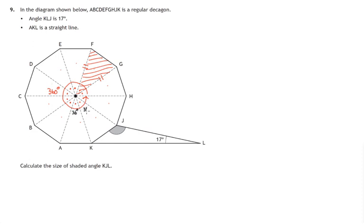So we've got ten 36-degree angles all the way around the central point in the decagon.